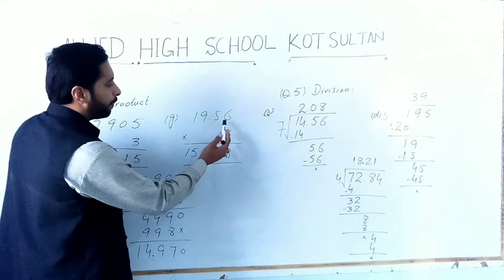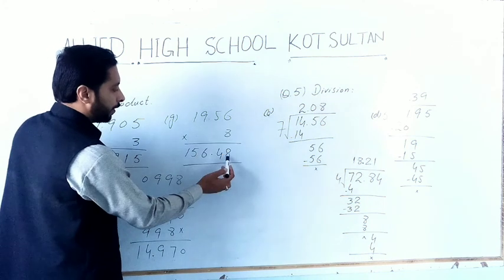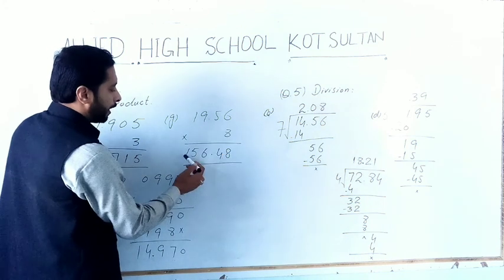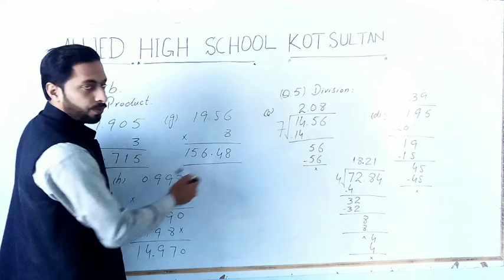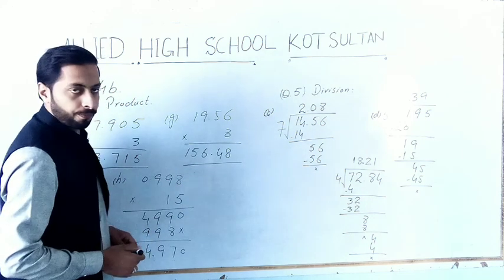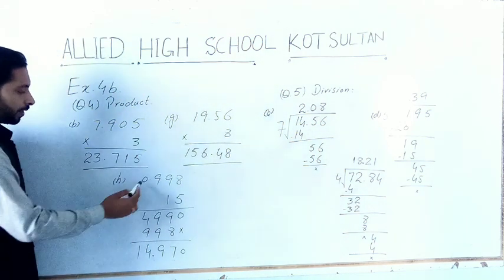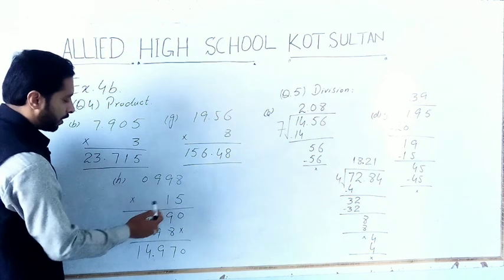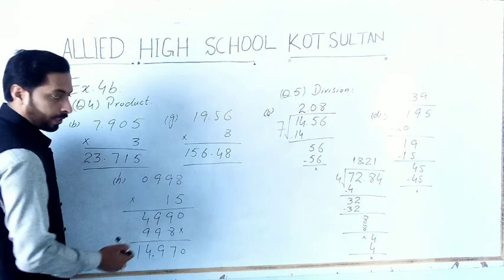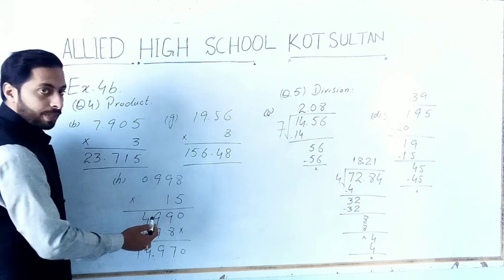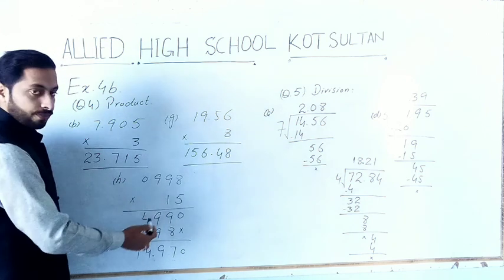We will place the decimal after two digits and the answer will become 156.448. The next part H is 0.998 multiplied by 15. We start multiplication from the right side.